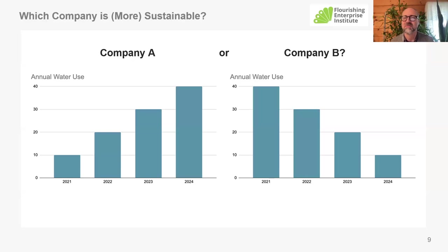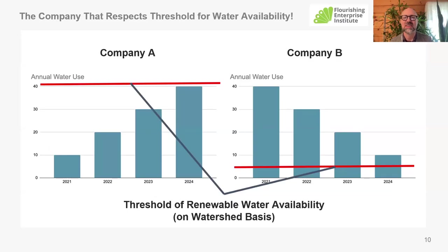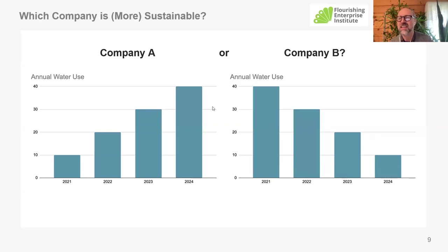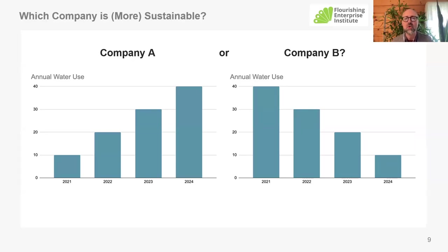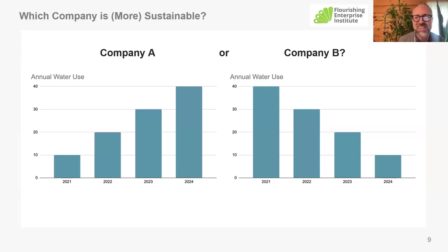I would say I don't know because it's just one indicator and I don't know the rest. I'm completely missing context — what are these companies doing? What context are they operating in? I think you all are figuring out that this is a little bit of a trick question. What we're trying to show here is that Company B reduced its water usage. One would think that Company B is more sustainable, and in fact that's what one would think from broad communications about sustainability — that reducing your impact is synonymous with sustainability. But it's missing the key context.